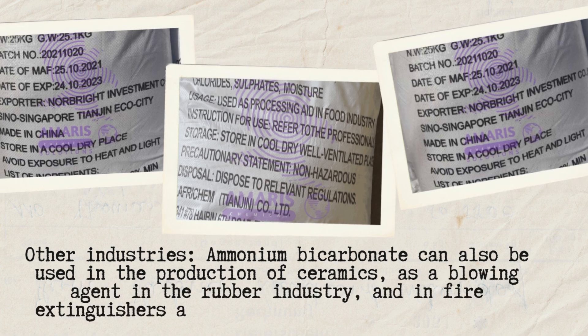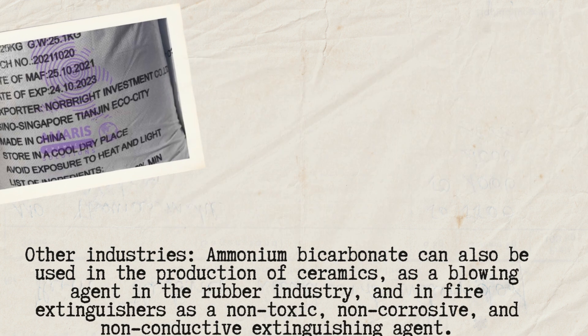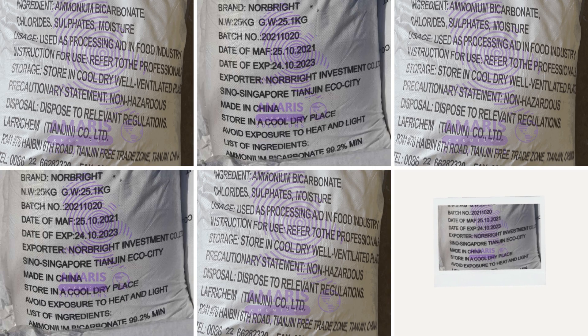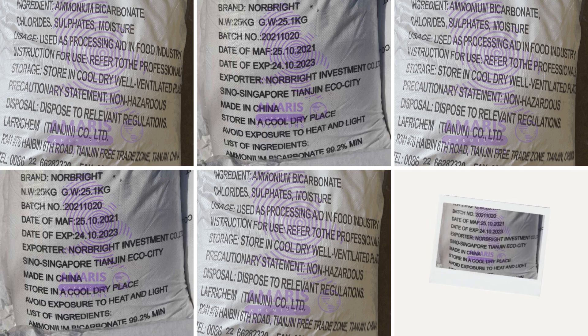In the chemical industry, ammonium bicarbonate is used as a source of ammonia and carbon dioxide in the production of other chemicals such as dyes, pigments, and plastics.